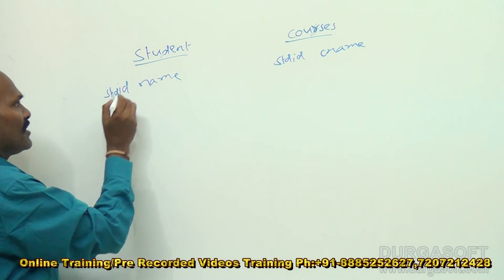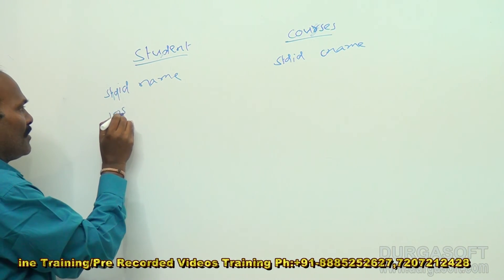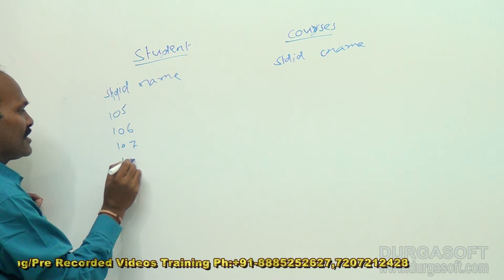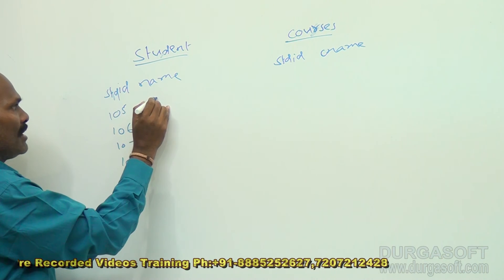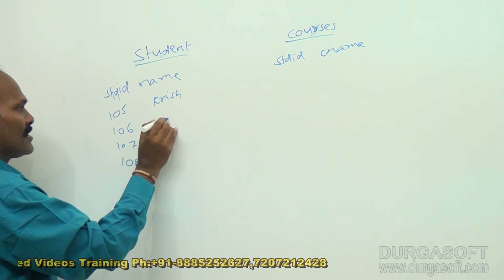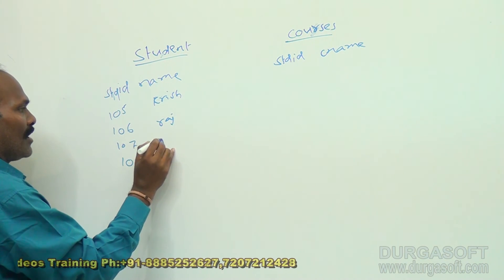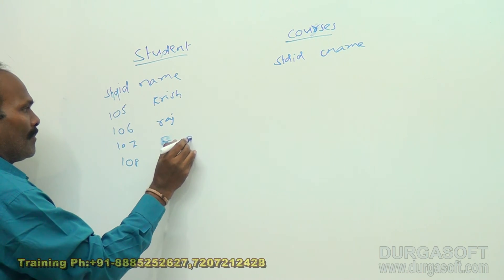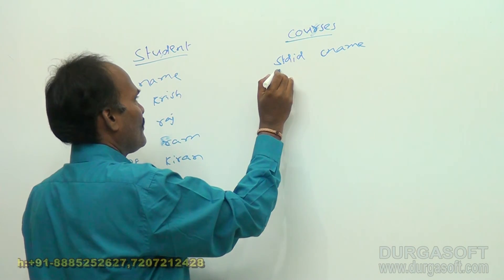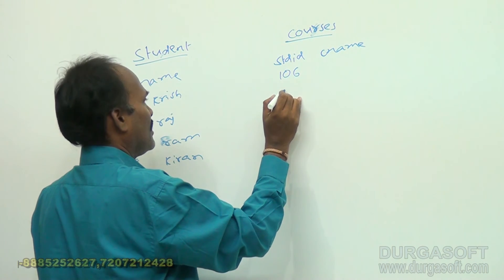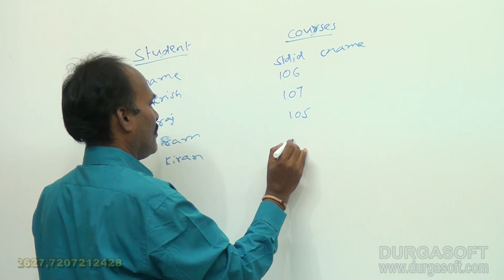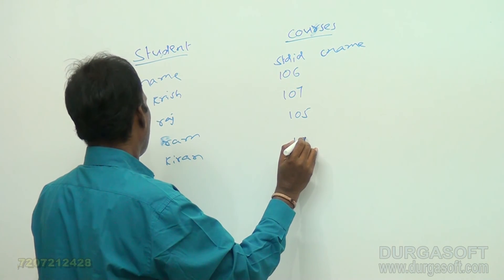Now, let us say the student IDs are 105, 106, 107, and 108. For all of these I am giving names like Krish, Raj, Ram, Kiran, and so on. In the courses table I also have student IDs: 106, 107, 105, and 108.